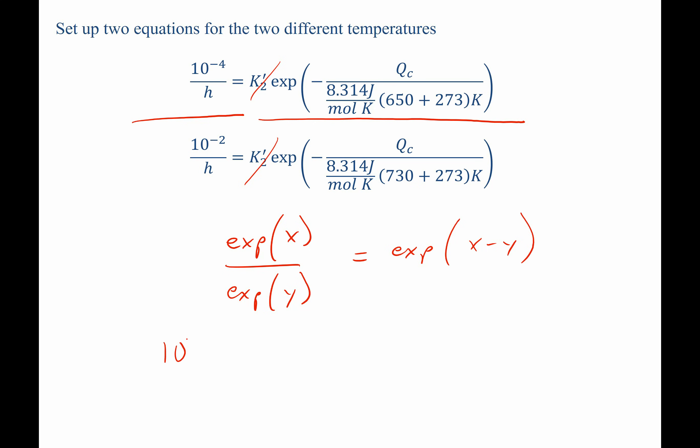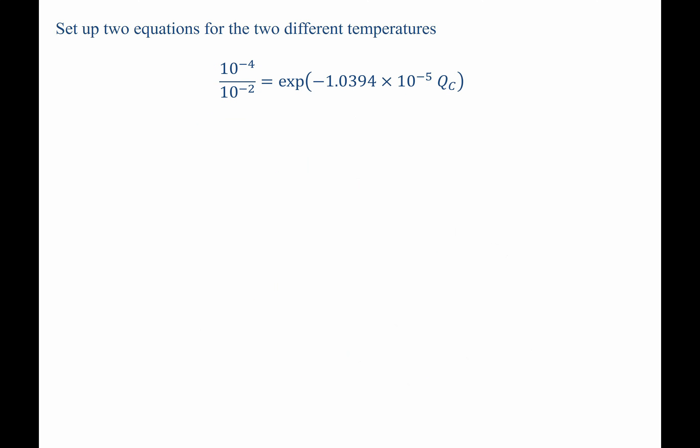Therefore, we can write our expression as 10 to the negative 4th over 10 to the negative 2, the per-hours cancel, equals exponential of negative Qc over R times 923K plus Qc over R times 1003K. When we go ahead and plug in values, we reach this expression. 10 to the minus 4 over 10 to the minus 2 equals exponential of negative 1.0394 times 10 to the negative 5 times the activation energy.